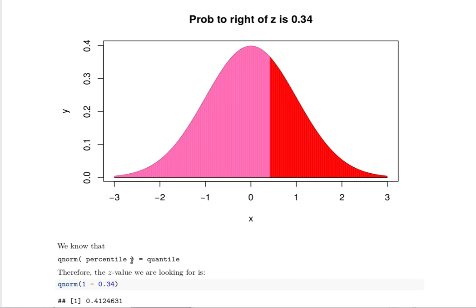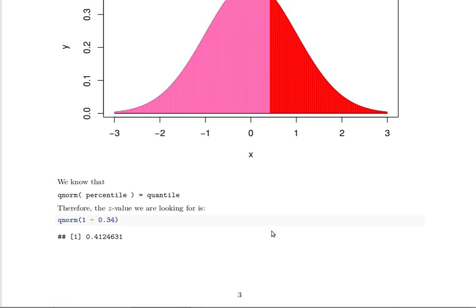We can find our desired Z value that has 34% to the right by finding the qnorm of this percentile, the 66% that's to the left. So qnorm of 1 minus 0.34 is going to be this value, 0.414.